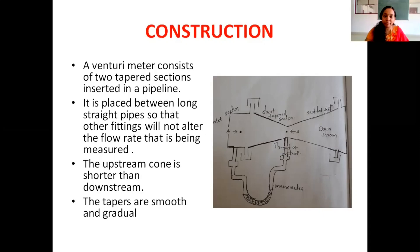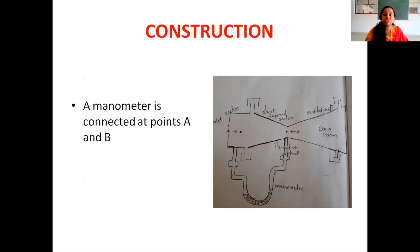Moving on to the construction of Venturi meter: it consists of two tapered sections. In between these two tapered sections, there is a narrow constriction known as the throat of the Venturi. This is the upstream section and this is the downstream section. The upstream tapered section is short compared to the downstream section, and this device is placed between a long straight pipeline. A manometer is connected between two points A and B, and is used to measure the pressure variation in the upstream.